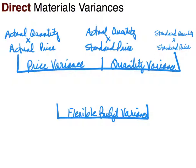Moving on to peg two, we have actual quantity, which we've already talked about. Now we can talk about standard price. Standard price is the price that you should have paid — like a budgeted price — what you should have paid per pound of material or per square yard, whatever the case may be.